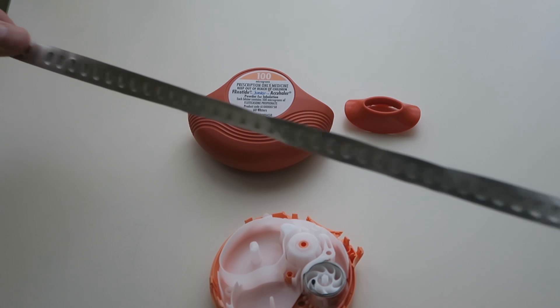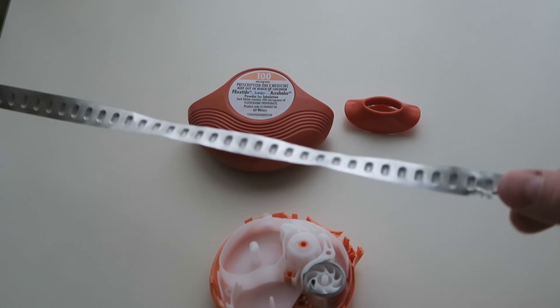Sixty blisters. So that's what sixty blisters on the inside would look like.